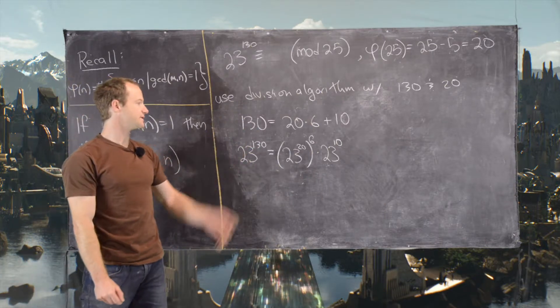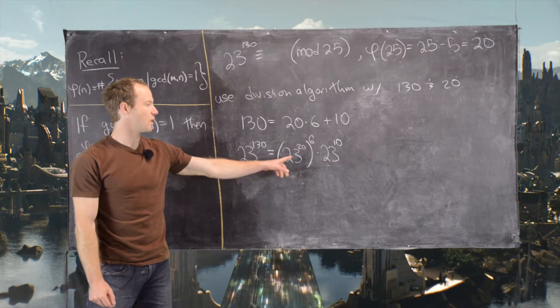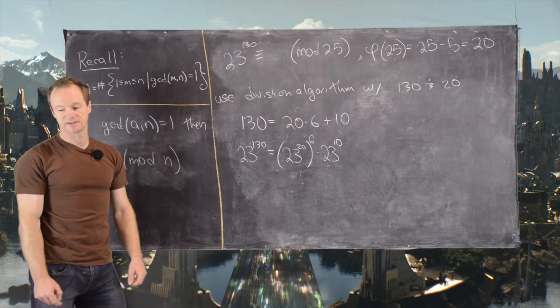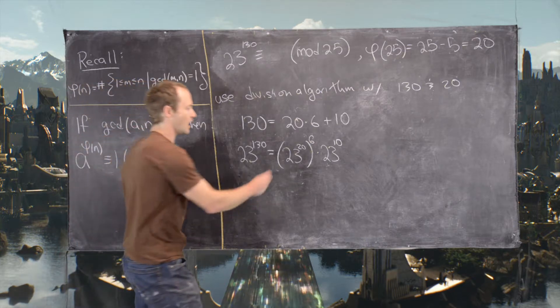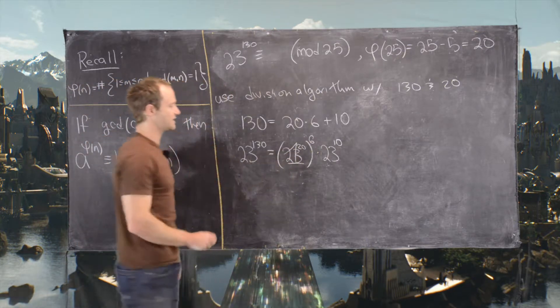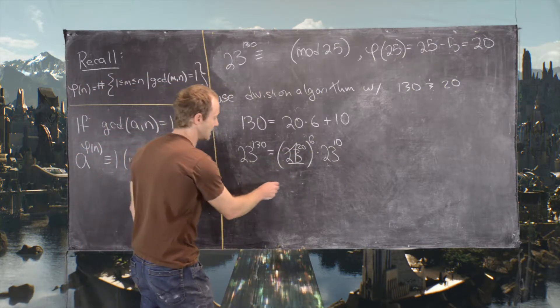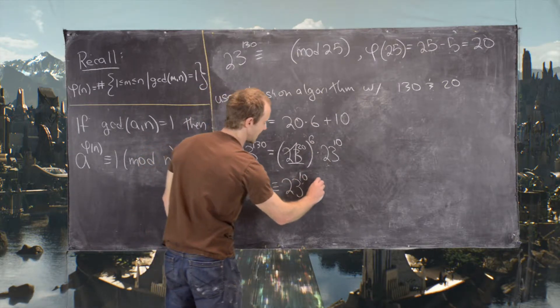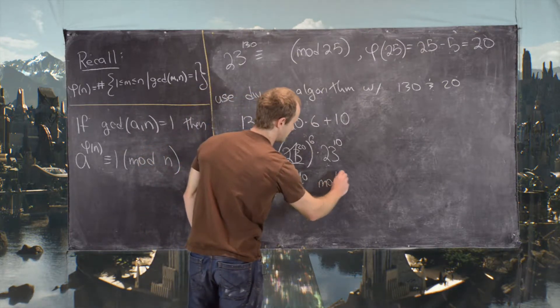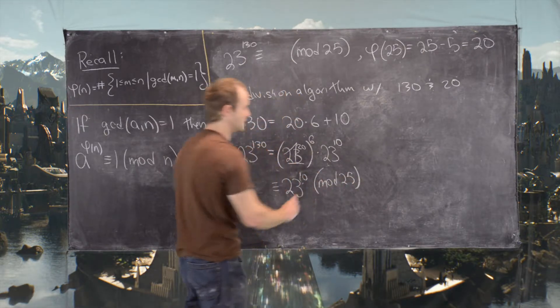So again, we used exponent rules here. Now we know 23 to the 20 is congruent to 1 mod 25 by Euler's theorem. So all of this is just 1 mod 25 by Euler's theorem. So that leaves us with this is congruent to 23 to the 10 mod 25.